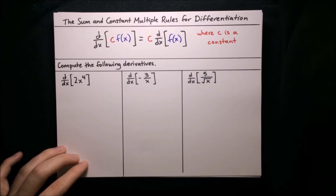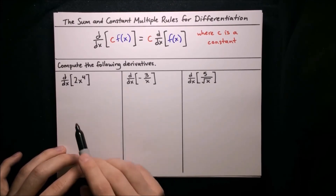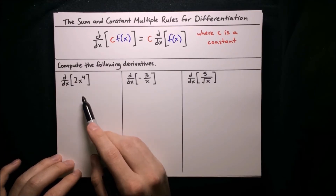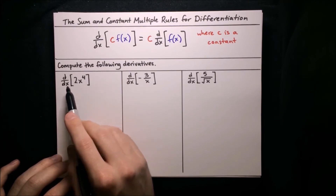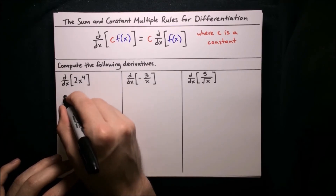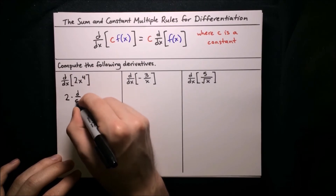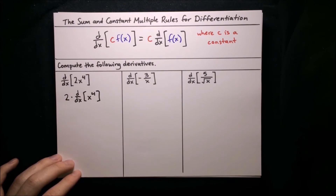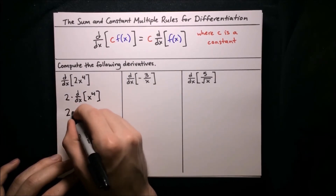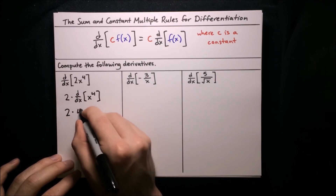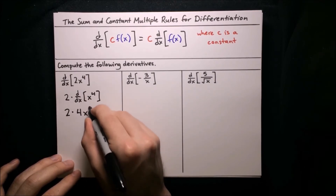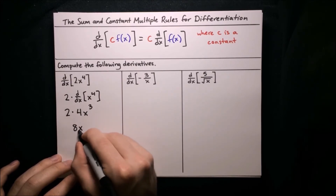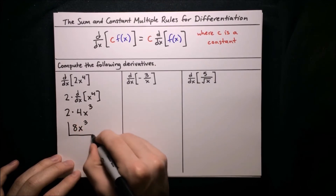Let's use this rule to compute the following derivatives. First, the derivative of 2x to the 4th. Applying the constant multiple rule, we factor that 2 outside the derivative: 2 times the derivative of x to the 4th. Using the power rule, bring down the 4, decrease the exponent by 1 to get 3, so 4x cubed. Then multiply: 2 times 4 is 8. So the derivative is 8x cubed.